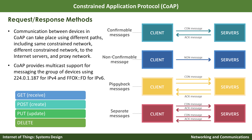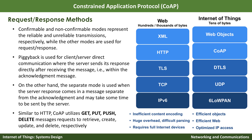Here we can compare the traditional web-based HTTP request-response model versus the CoAP model. HTTP uses IPv4 or IPv6, while CoAP uses 6LoWPAN. CoAP uses UDP compared to HTTP's use of TCP. From the security point of view, the traditional web uses TLS over TCP, while CoAP uses DTLS over UDP. Within HTTP the data format is XML, and for CoAP they use web objects. That is the comparison between HTTP and CoAP.